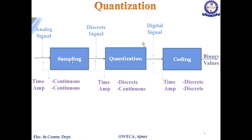First you apply sampling techniques — we have learned about the Nyquist criteria. After sampling you get a sampled signal. The sampled signal is discrete in nature. For example, when you give input x(t), you get x(n) = sin(2πfnTs), where Ts is the time interval. So in the discrete signal, time is in discrete form but the amplitude is still in continuous form.